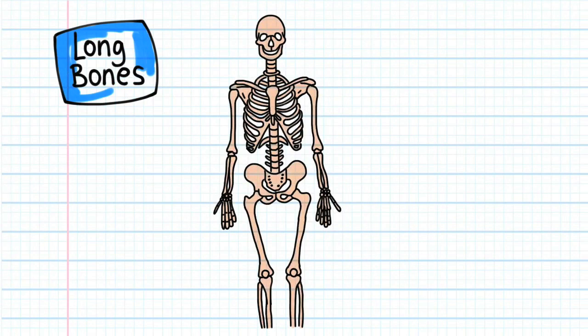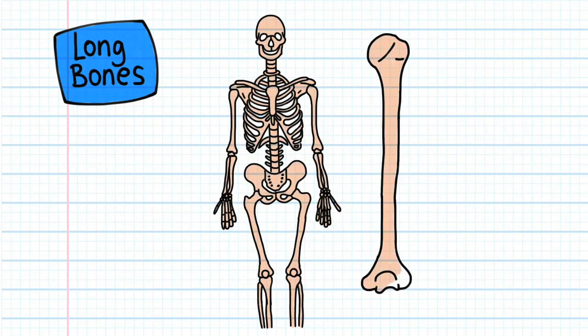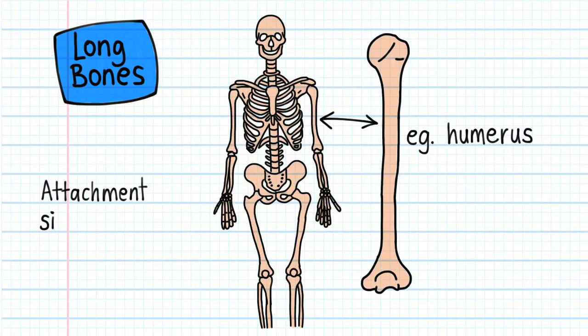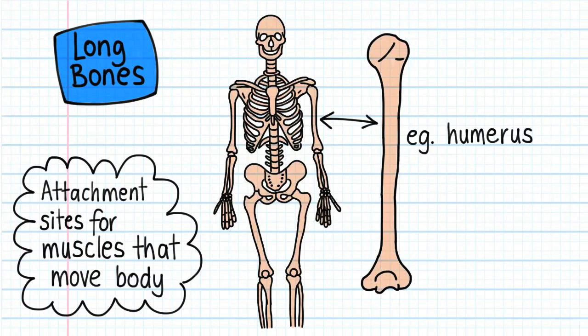First let's look at long bones. Long bones include the humerus and femur. These bones are attachment sites for muscles that move the body.